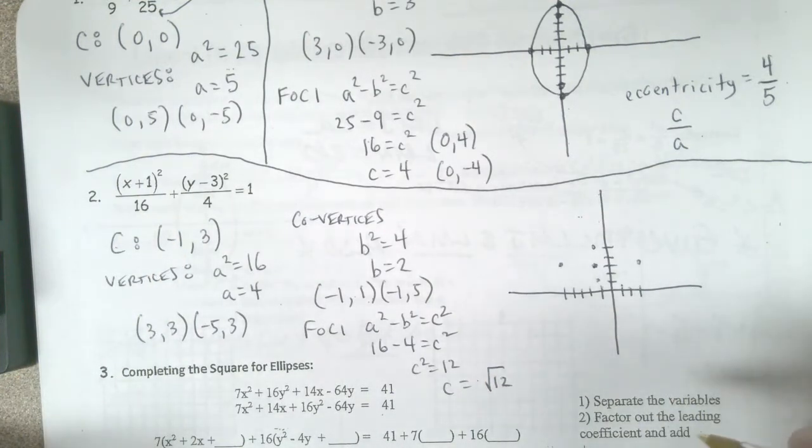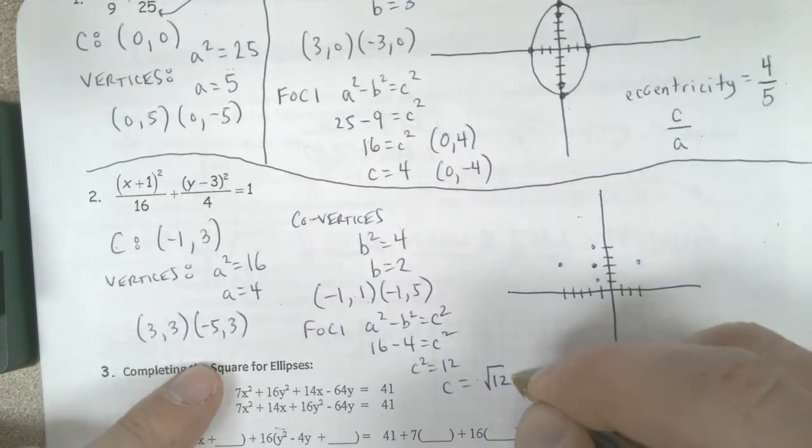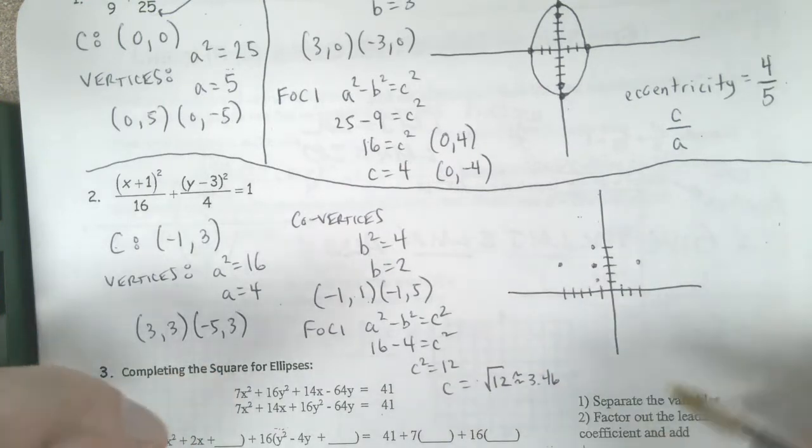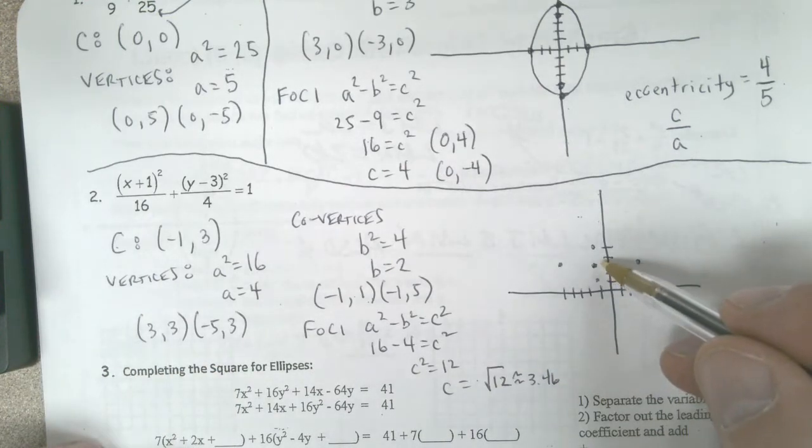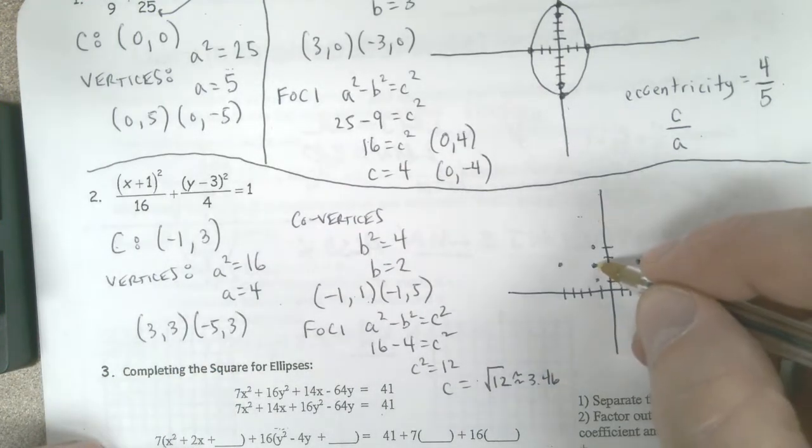If we put the square root of 12 into our calculator, we get approximately 3.46. So you're just going to kind of guesstimate on your graph where that would be.